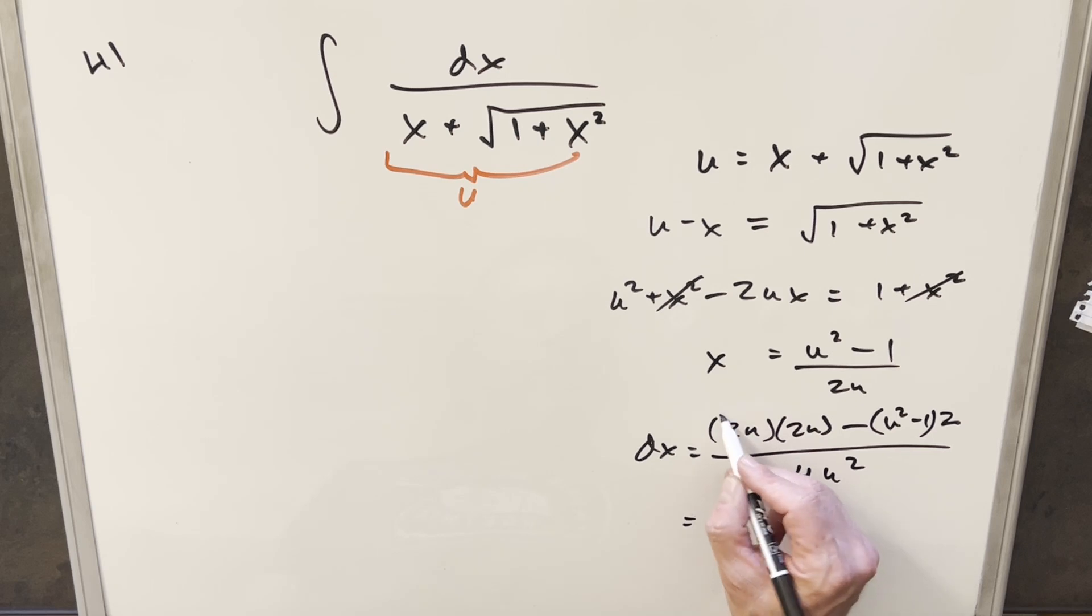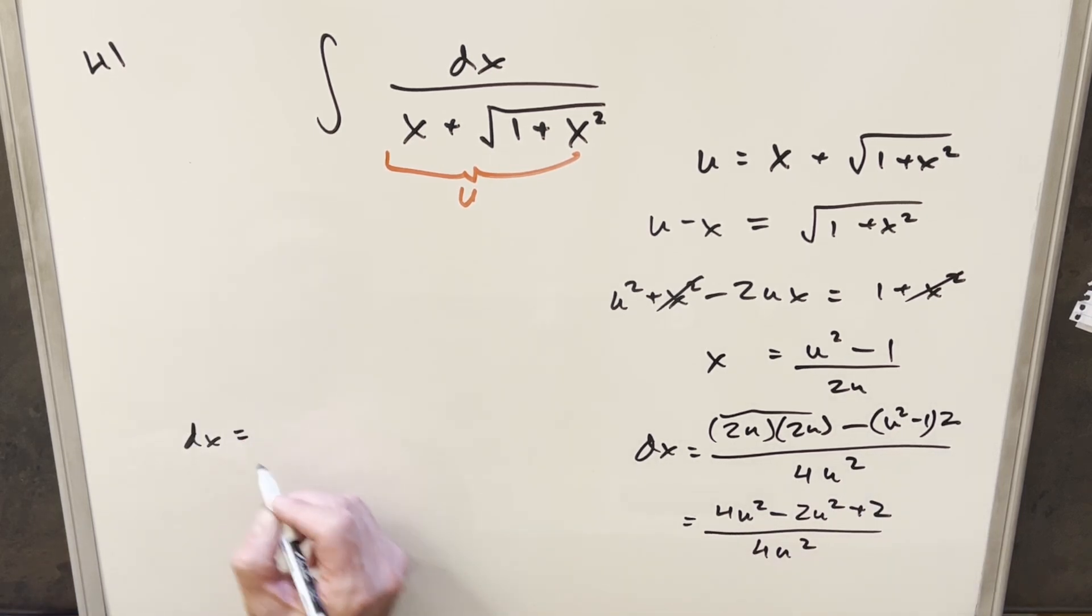Getting some simplification, this first piece is going to be 4u squared. Distributing everything, we have minus 2u squared plus 2 over 4u squared. I think I'll just come over here and clean it up. So this here is going to become 2u squared plus 2 over 4u squared.